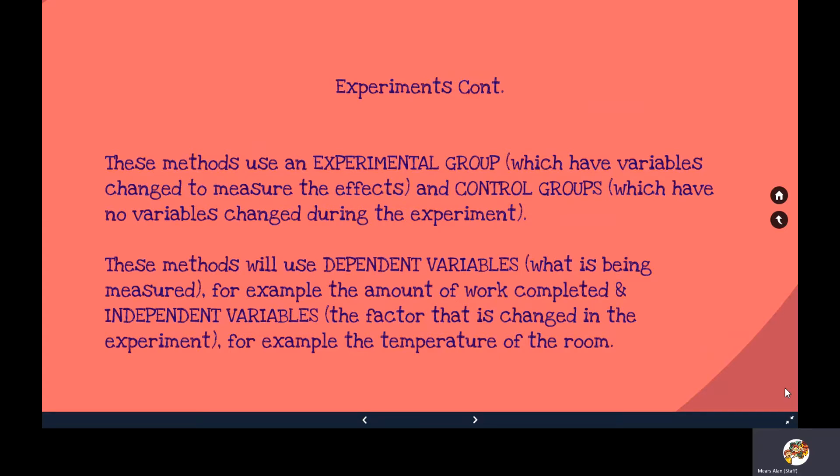These methods use dependent variables — solid things we can measure. For example, if studying a group of students, the dependent variable might be how much work is completed. The independent variable is the thing we change, such as the temperature in a room. We test this on the experimental group by changing classroom temperature to measure work output, while the control group stays in a room of consistent temperature.